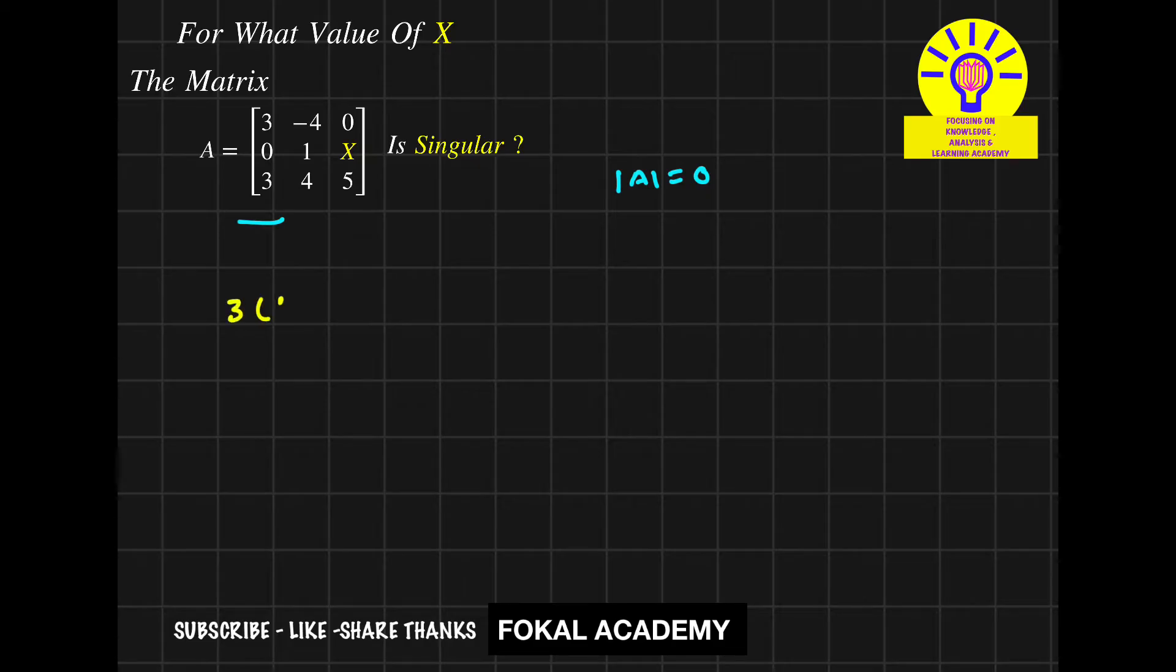3 into 5 minus 4X, plus 4 into 0 minus 3X, plus 0 equal to 0. So it becomes